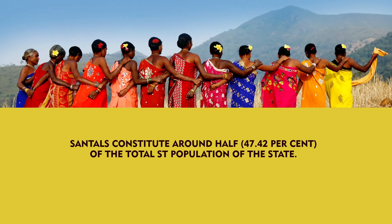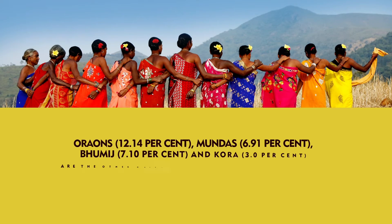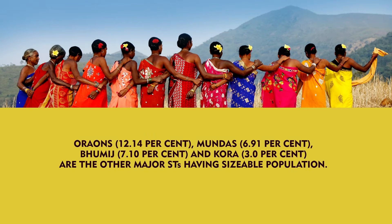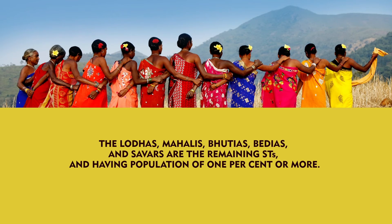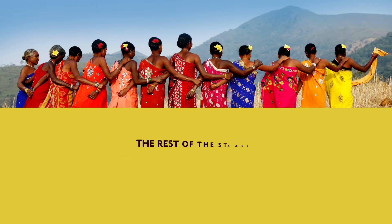Scheduled tribes constituted 5.80% of the total population of the state. Santals constitute around half of the total ST population of the state. Orans, Mundas, Bhumij and Khora are the other major STs having sizable population. Along with Santal, they constitute nearly 76.8% of the state's total ST population. The Lodas, Mahalis, Bhutias, Berias and Savars are the remaining STs having population of 1% or more. The rest of the STs are very small in population size.